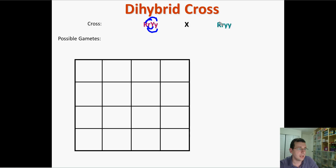What about this second organism? He can make big R with big Y, big R with big Y again, little r with little y, and little r with little y again. These pairs are basically the same thing, so this organism is going to have only two types of gametes.